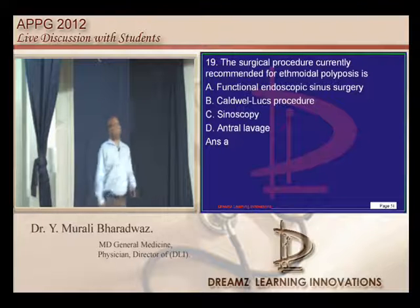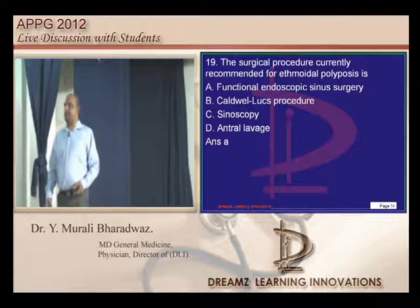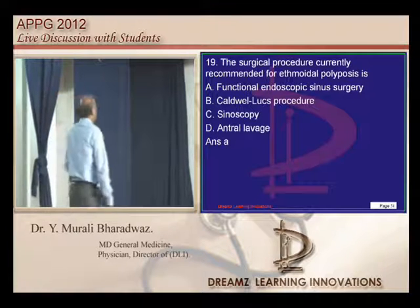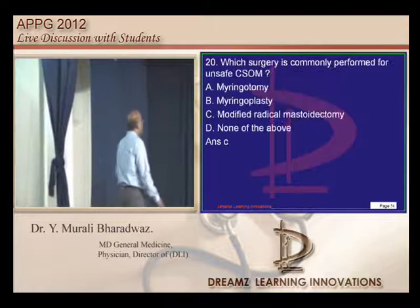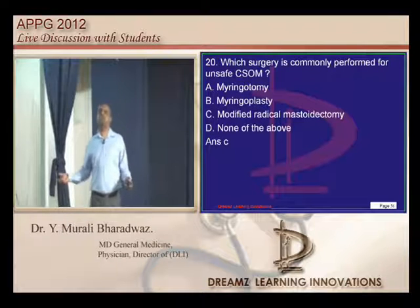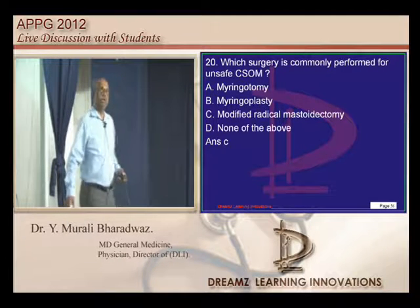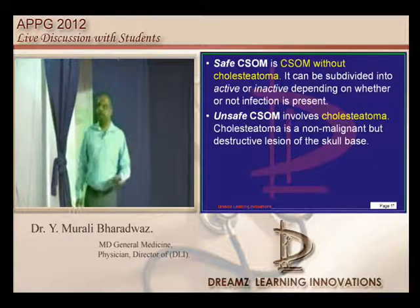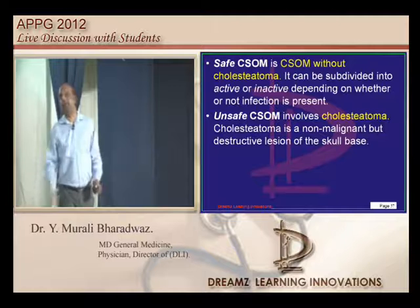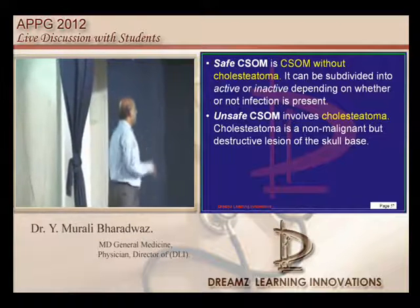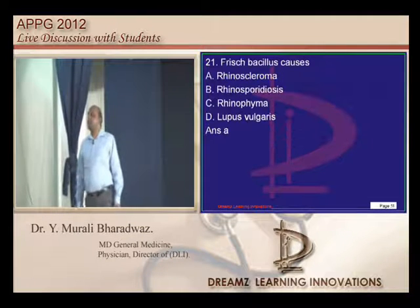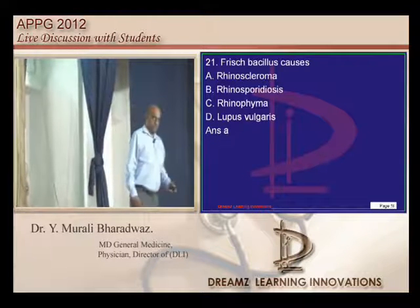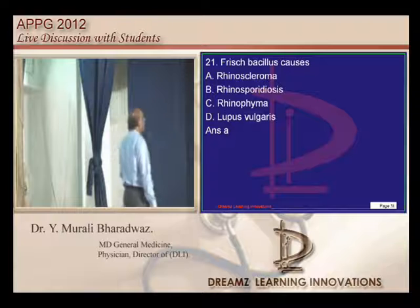For ethmoidal polyposis, the treatment is functional endoscopic sinus surgery (FESS) — generally one question comes on FESS. Regarding unsafe CSOM: CSOM with cholesteatoma is called unsafe, and modified radical mastoidectomy is the procedure of choice to completely clean it out. Frisch-Massilis is the bacillus causing rhinoscleroma, which is well known.